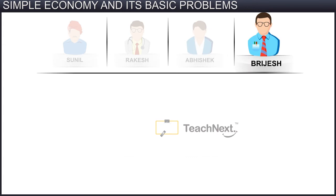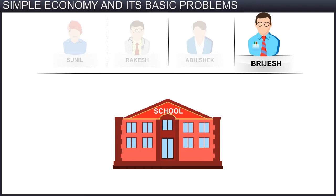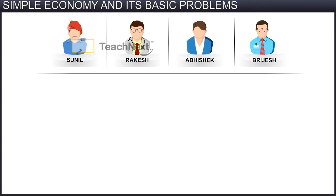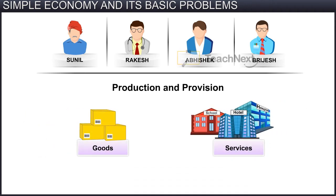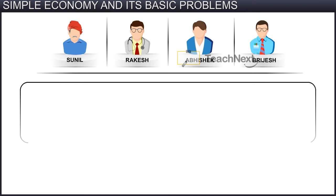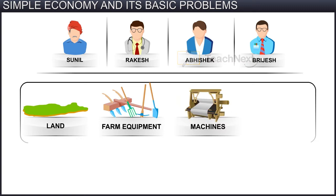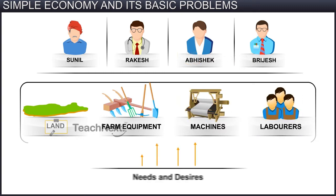Finally, Bridges is a school teacher who teaches in one of the government schools to earn his livelihood by way of a monthly salary. So, all four friends are engaged in the production and provision of different goods and services in order to earn some money. Each of them uses some resource at hand, like their own services, land, farm equipment, machines, and labourers, to fulfil their desires.